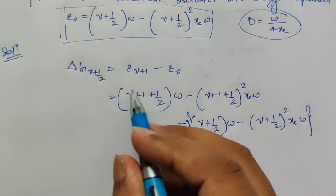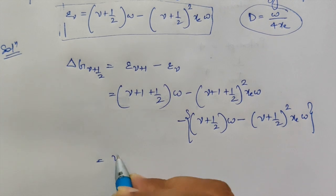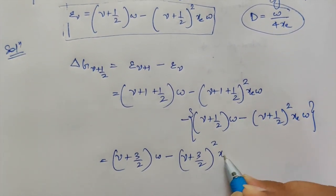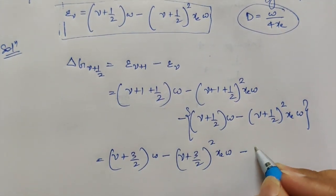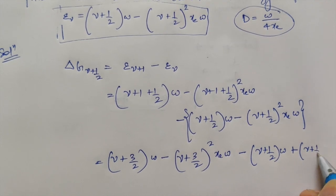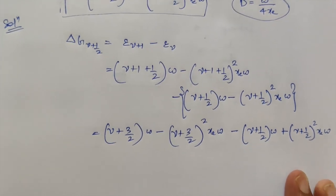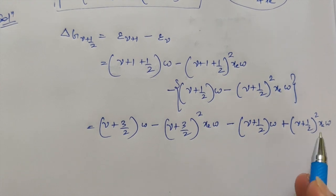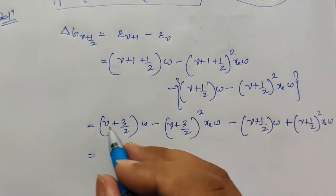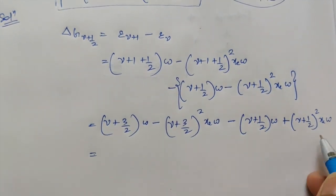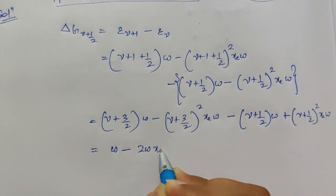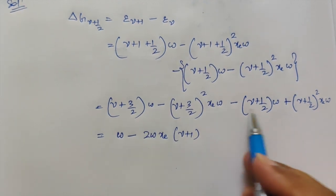Now just open the brackets and solve. You will get: (ν + 3/2)ω − (ν + 3/2)² Xeω − (ν + ½)ω + (ν + ½)² Xeω. Open the squared terms using (A+B)² expansion, subtract, and simplify. The ν terms cancel out, and what you get at the end is: ΔG(ν+½) = ω − 2ωXe(ν+1).